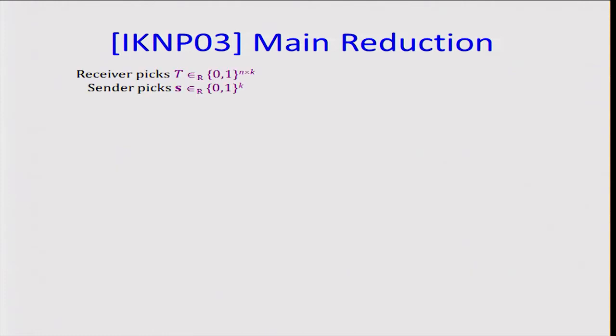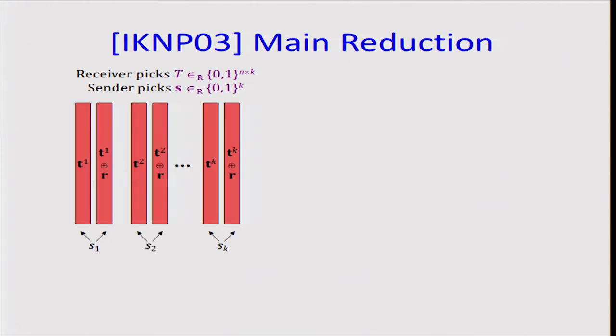In the main reduction, we let the receiver pick a random N by K matrix T, and then the sender picks a random row vector S. Then the receiver and the sender will participate in K instances of OT except their roles will be reversed. In each instance, the receiver is going to pick two columns of length N, such that the first column of each pair is exactly the pair corresponding to the matrix T. And the second column will be the first column XORed with the selection vector R.